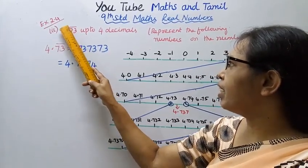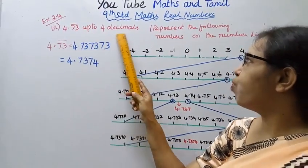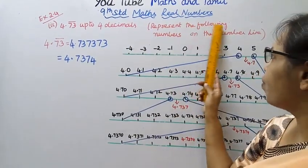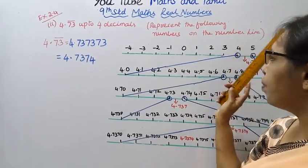4.73 bar up to 4 decimals. Represent the following numbers on the number line.